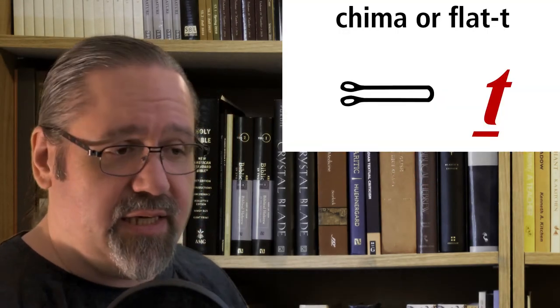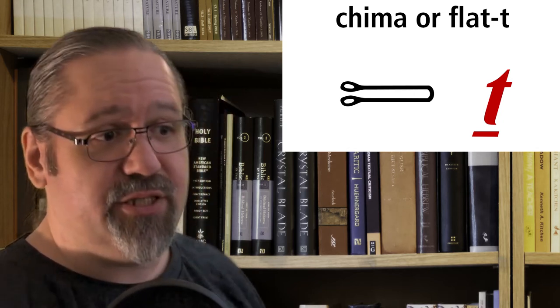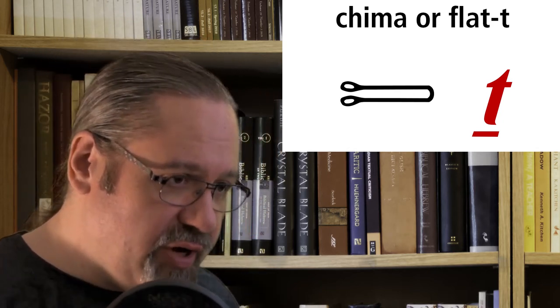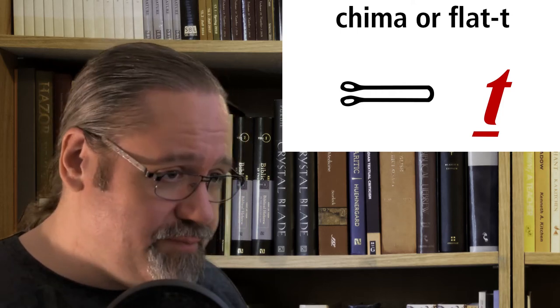The second T is actually called the Chima, and it's portrayed as a tether. Now, to draw this letter, you draw a flat line and curve it back on itself. Then draw a loop at each end.